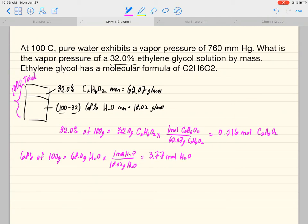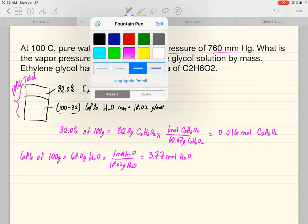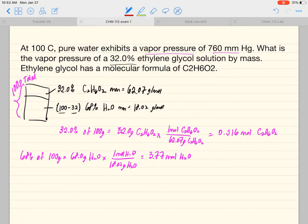Now we want to calculate the mole fraction of water, which is the volatile substance here. It has a vapor pressure of 760. So what we want to do here is calculate the mole fraction of water, and that's equal to the moles of water divided by the total moles: moles of water plus moles of my ethylene glycol.